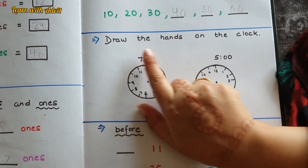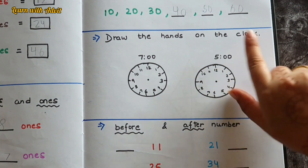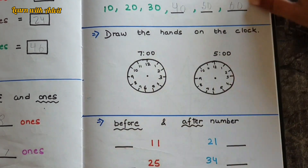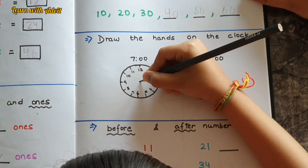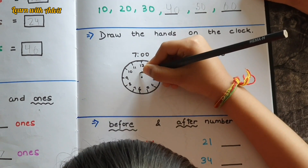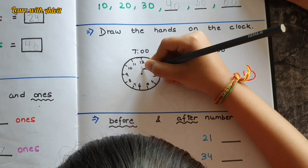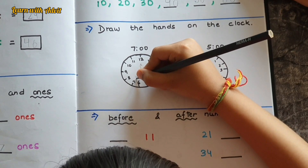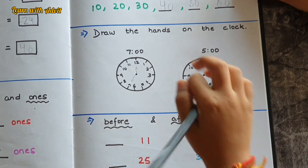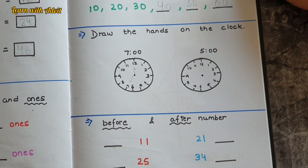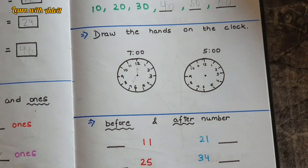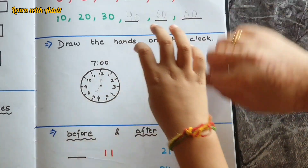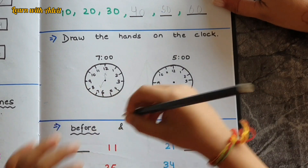Here, draw the hands on the clock. You have to draw the hand for seven o'clock and five o'clock. Come on, show it. Seven o'clock — which hand will be longer? Point to 12, then to 1. Make the minute hand a little longer — come on, make it for five o'clock.